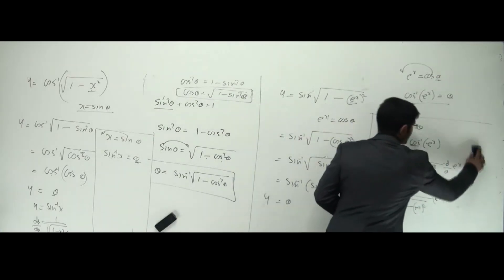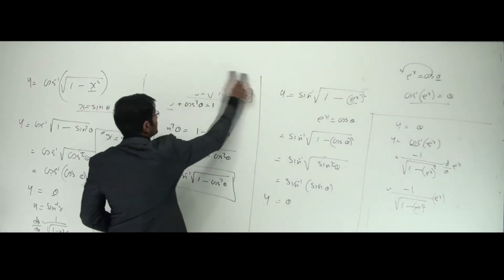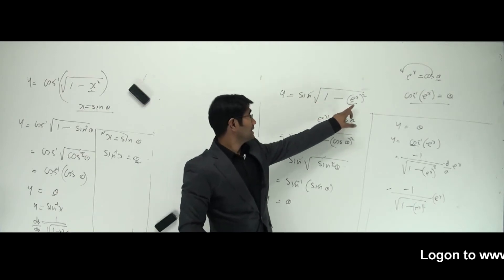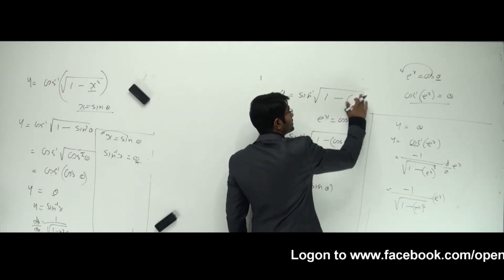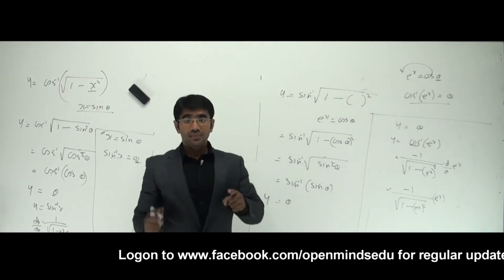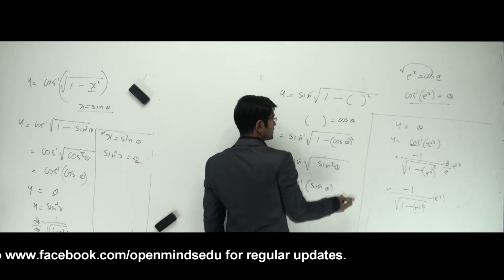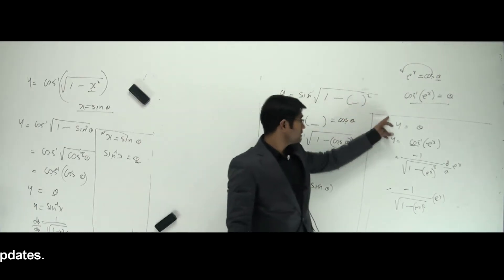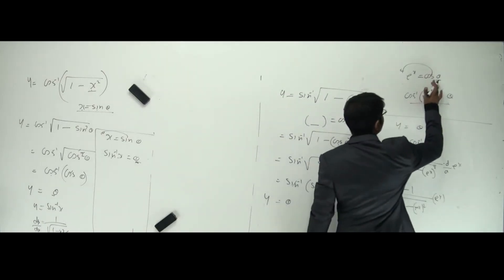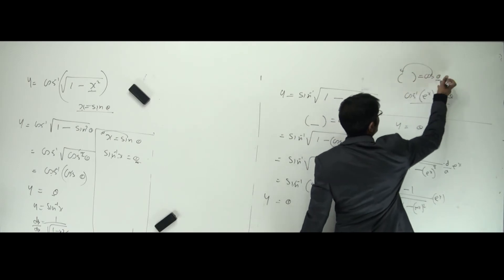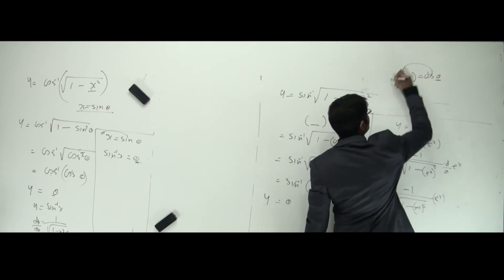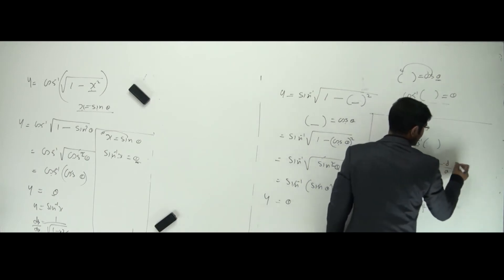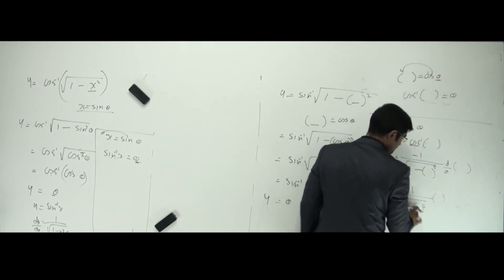Can I make a more general formula using this substitution? Anything which looks like y equals sine inverse of root of one minus f(x) whole squared — in this case, I'll write whatever function as cos theta. Whatever is inside that bracket becomes cos theta. So this whole problem is the same: one minus cos squared theta is sine squared theta, root cancels, sine inverse of sine theta gives theta, and then y equals cos inverse of that function. That's the general format.